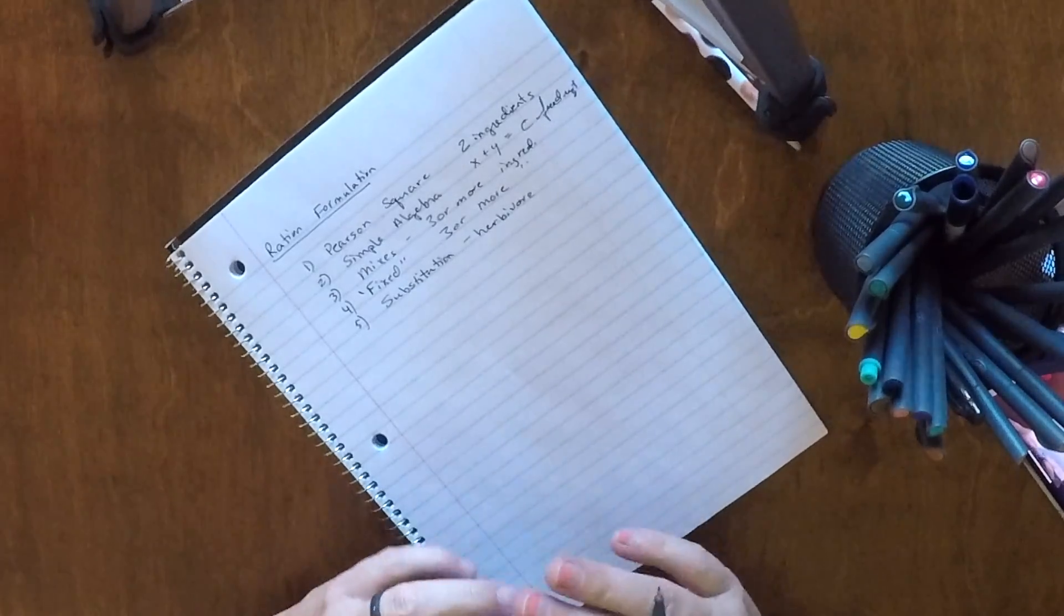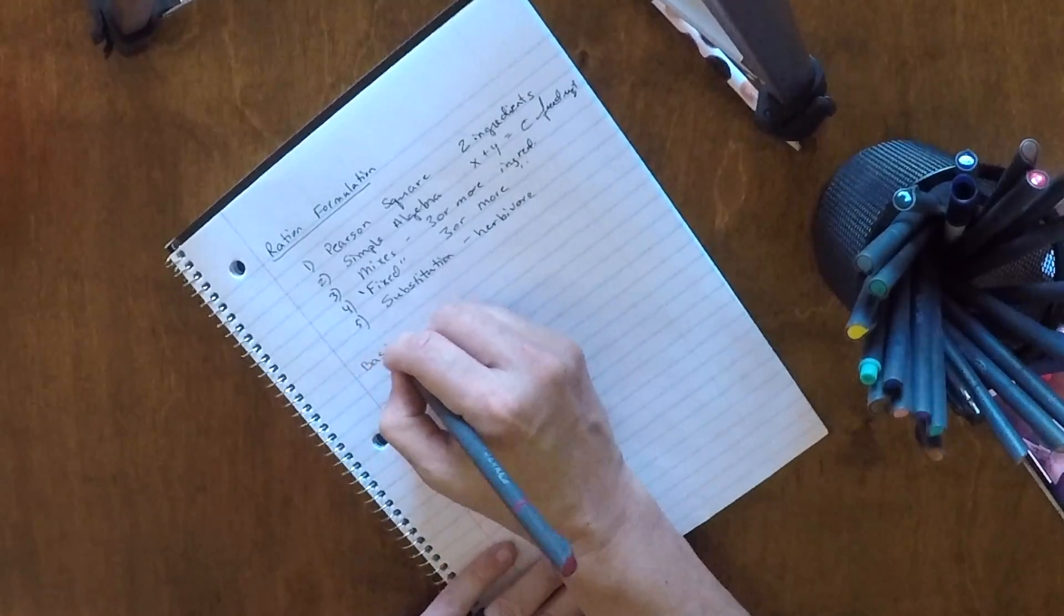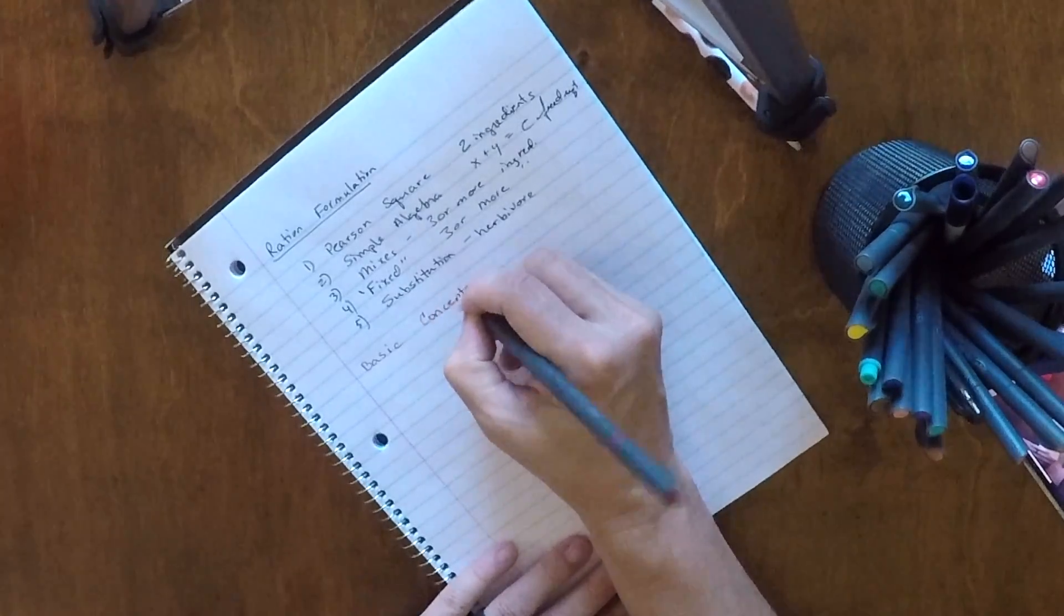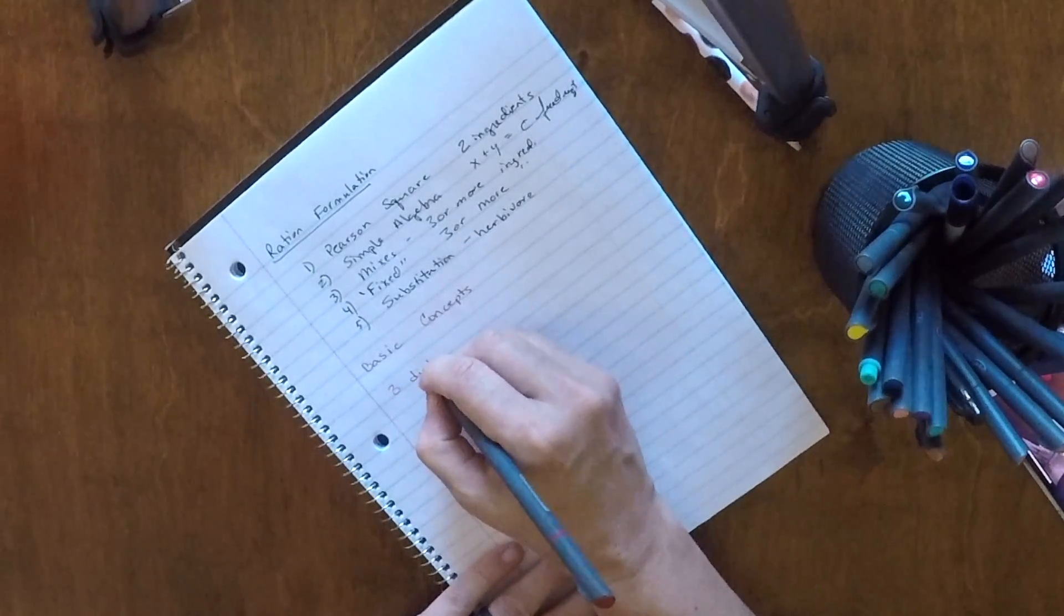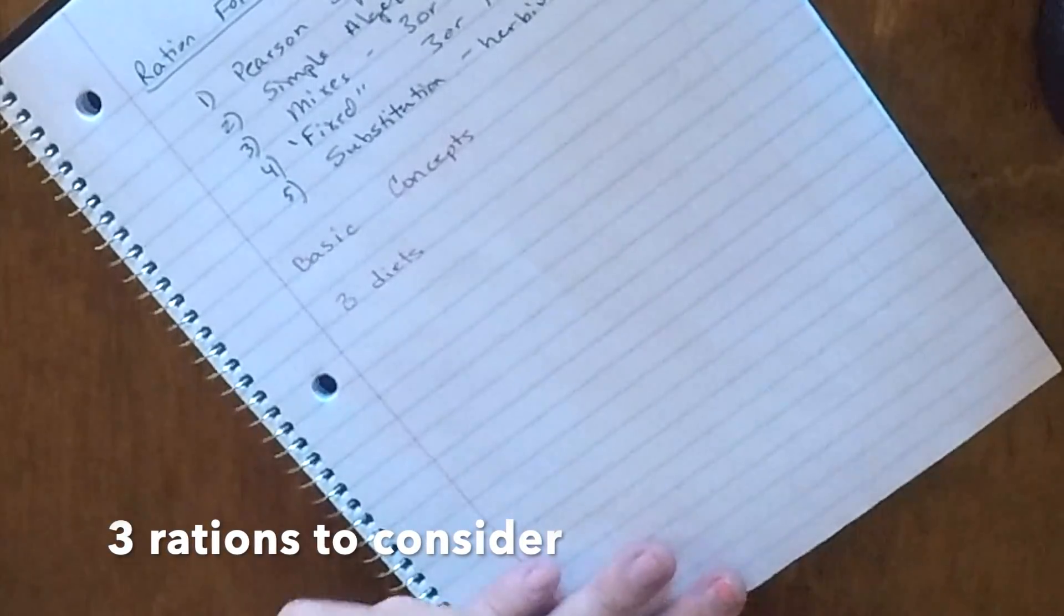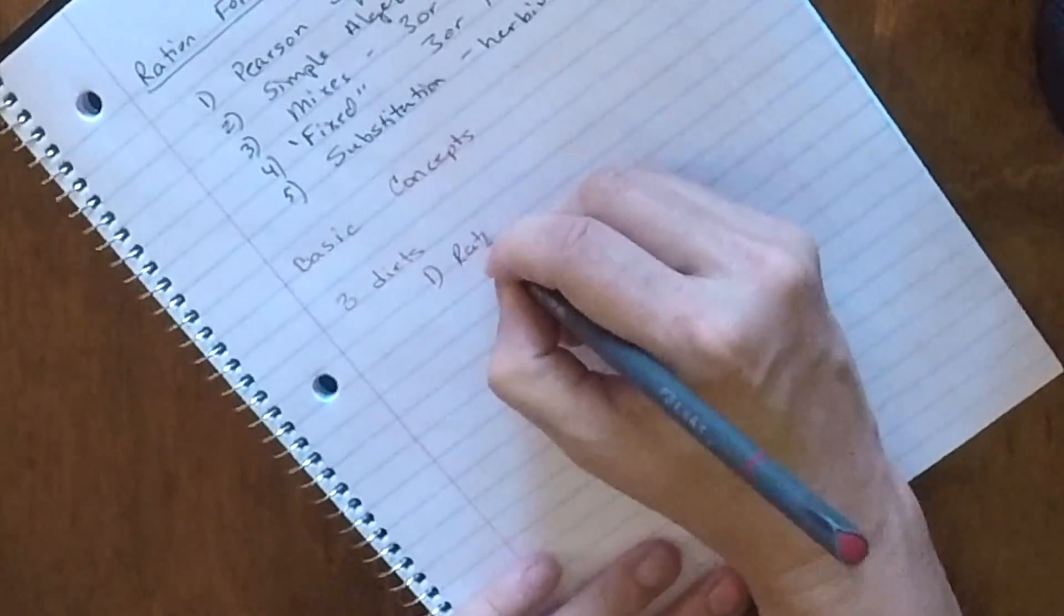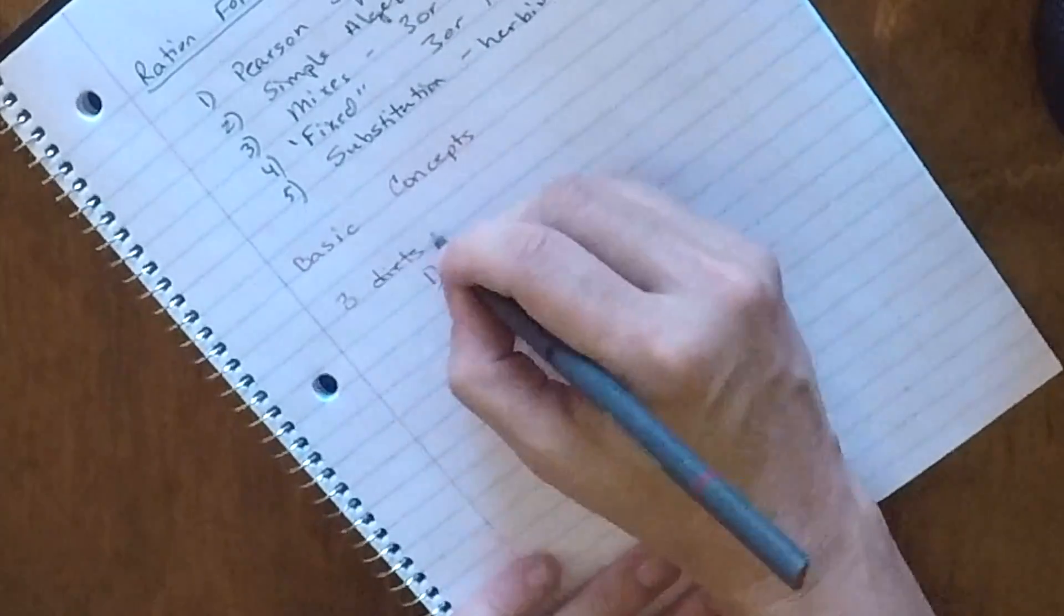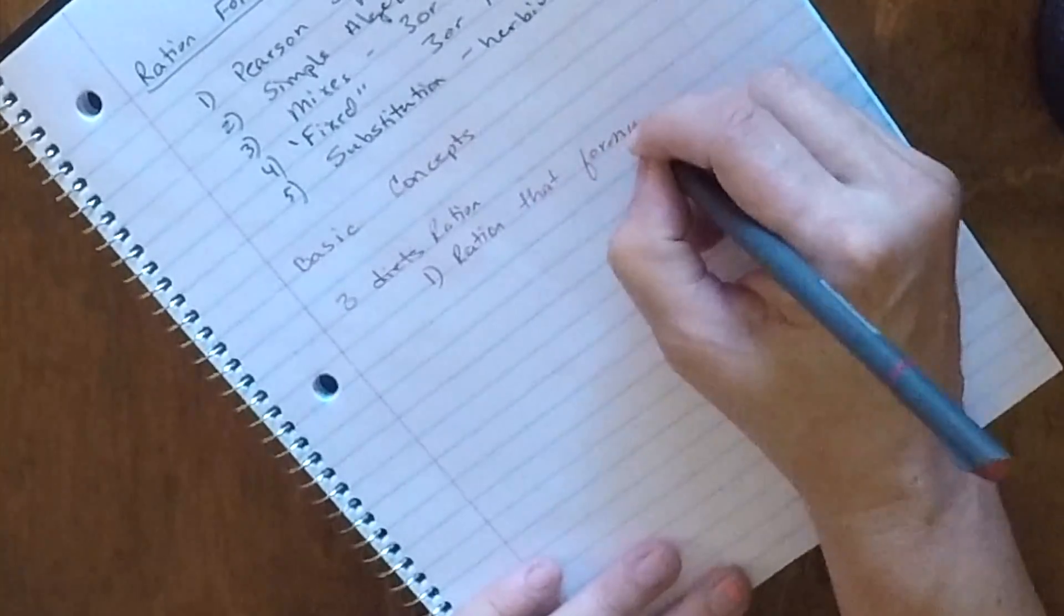All right, as we start moving forward, before we even begin the Pearson Square, we need to talk about the basic concepts in ration formulation. And so those basic concepts, there's actually three diets that we work with when we're formulating a ration. The first one is actually the ration or the diet that is formulated. This is the one that the nutritionist comes up with. It's specified for all these specific ingredients, usually on a dry matter basis, those types of things. It's what we calculate.